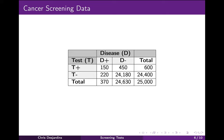Similarly, the negative predictive value, called NPV, of a test is the proportion of people who tested negative who actually do not have the disease. In this study, there were a total of 24,400 people who tested negative. Of these, 24,180 were cancer-free, so the NPV is 24,180 divided by 24,400, or 99.1%. Nearly all of the people who tested negative really were disease-free. The remaining 0.9%, 220 people, are false negatives. Note how careful you need to be about denominators. For PPV, the denominator is the total number of people who tested positive, not the total number of people with the disease, and not the total number of people in the study.